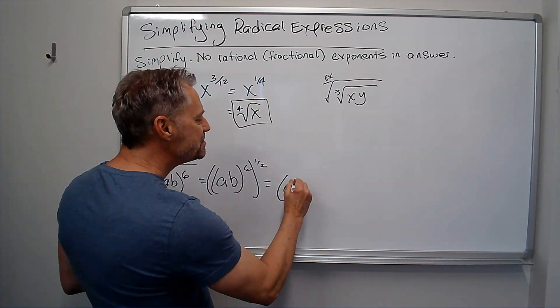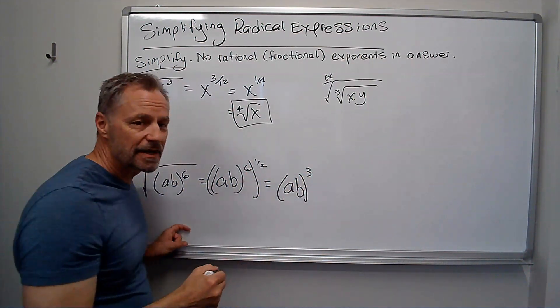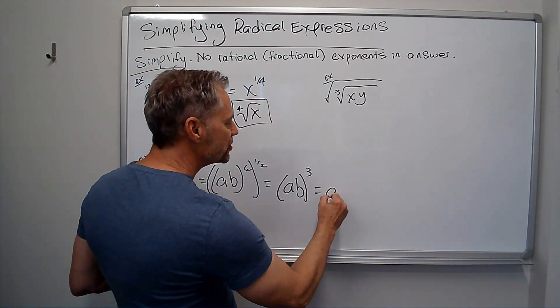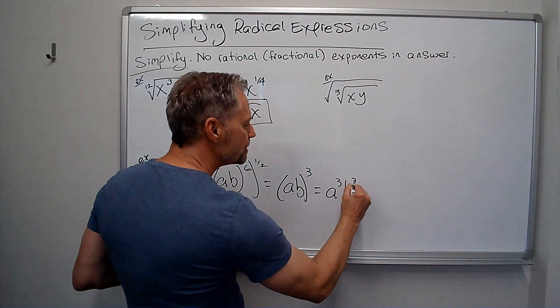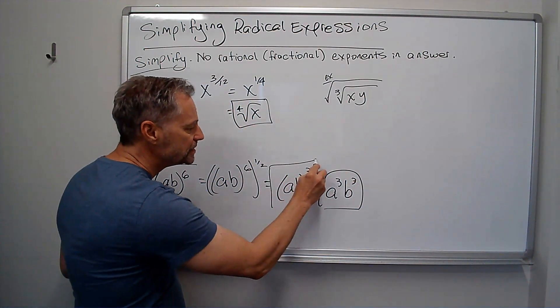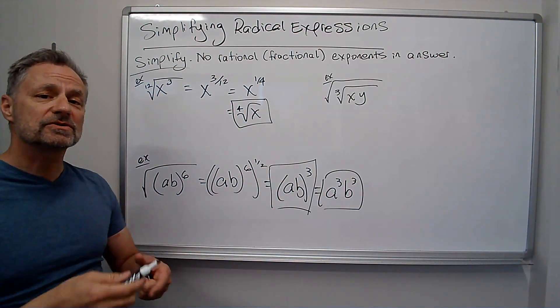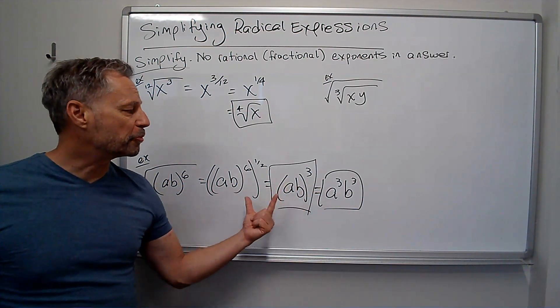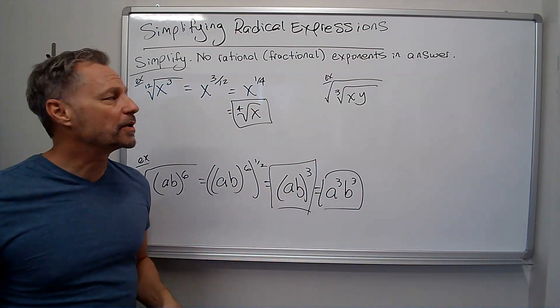So what I get is ab to the third, and then remember I can distribute that in there. So that's going to be a to the third, b to the third. That's going to be my answer. They may have left it this way. Either of those are right. They're both equivalent, so both of those are fine. We're not breaking any rule by leaving it one way or the other.